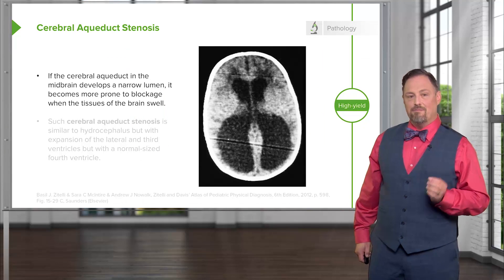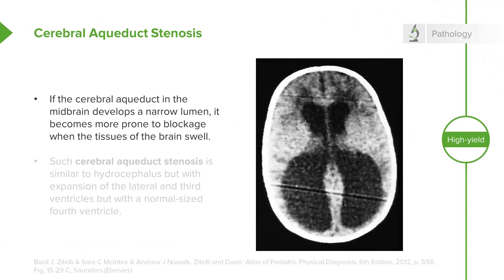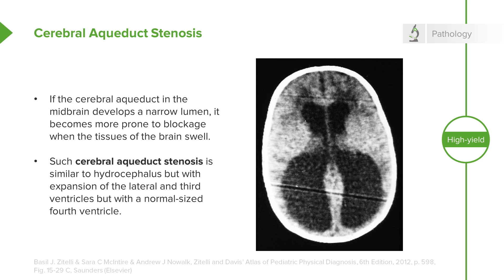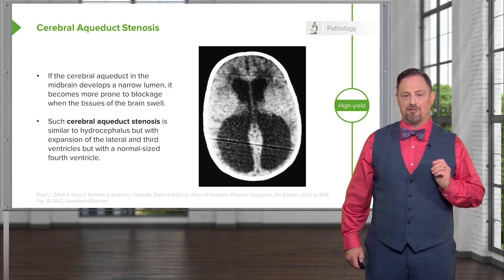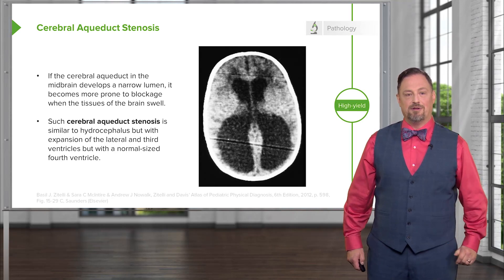A distinct condition is cerebral aqueduct stenosis. If the cerebral aqueduct inside the midbrain is too narrow, fluid has difficulty moving from the lateral and third ventricles to the fourth ventricle — where CSF escapes the ventricular system to cushion the brain. Narrowing of that canal can seal off the lateral and third ventricles, and since the choroid plexus continuously produces CSF, those ventricles will swell and compress the brain from the inside. Acute onset is a medical emergency; gradual onset can be difficult to catch but will eventually cause neurologic symptoms.